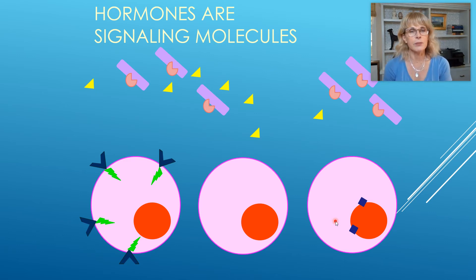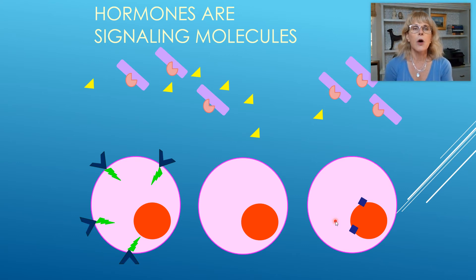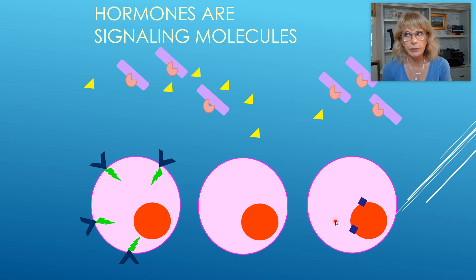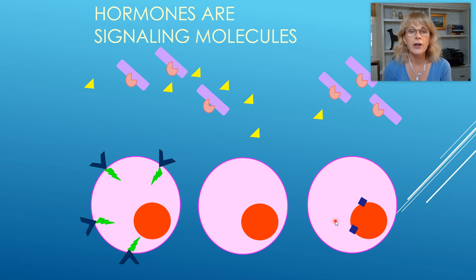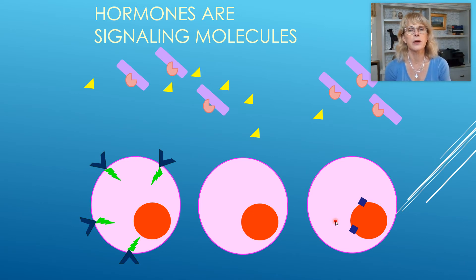One of the concepts that it's important for you to understand is the concept of target cells. Hormones are molecules that will travel in your blood — hormone communication molecules, they will go everywhere that your blood goes, they go everywhere in your body, almost. And yet, not every cell in your body will respond to every hormone.